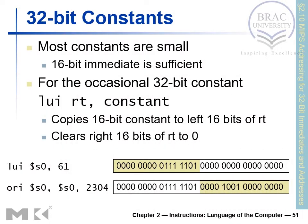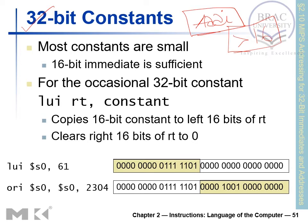We already know how to handle 16-bit constants using ADDI, but what if the constant is more than 16 bits — say 32 bits? There is no direct instruction that can handle more than 16-bit constants. I-type instructions can only handle constants that are less than or equal to 16 bits, so we need a special arrangement for this scenario.